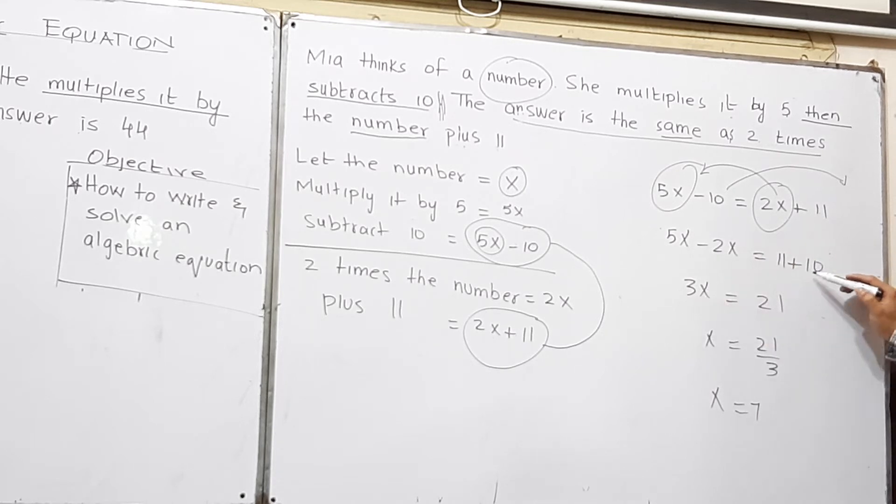5x minus 2x is 3x. 11 plus 10 is 21. And from here, x will be equal to 7.